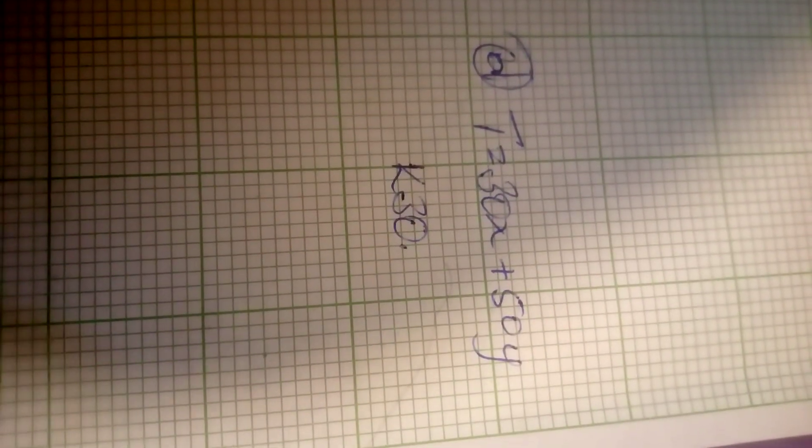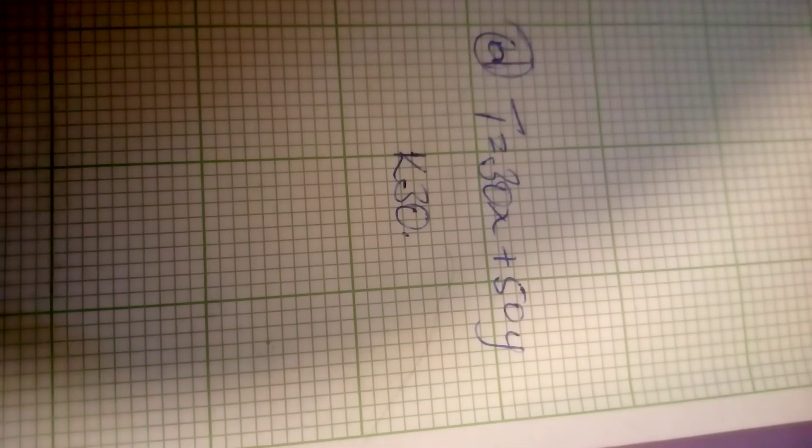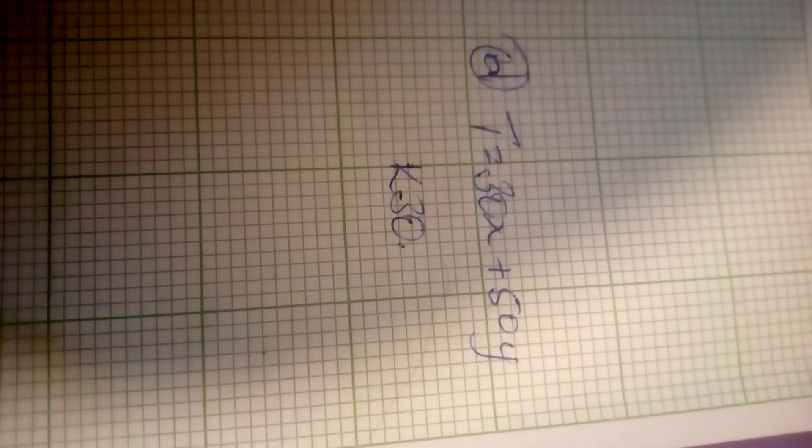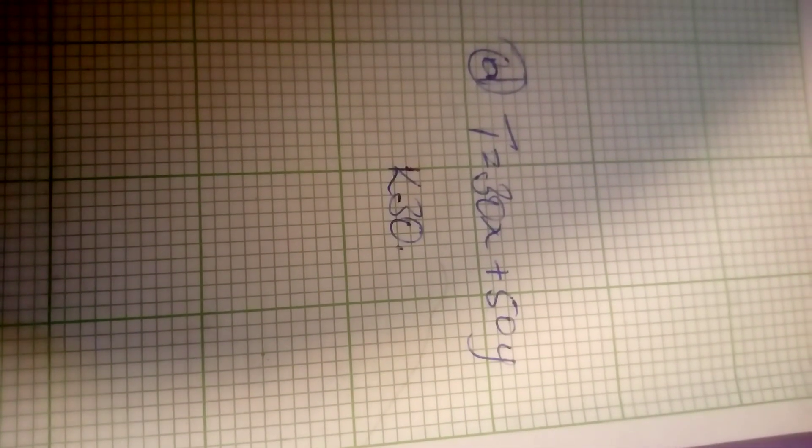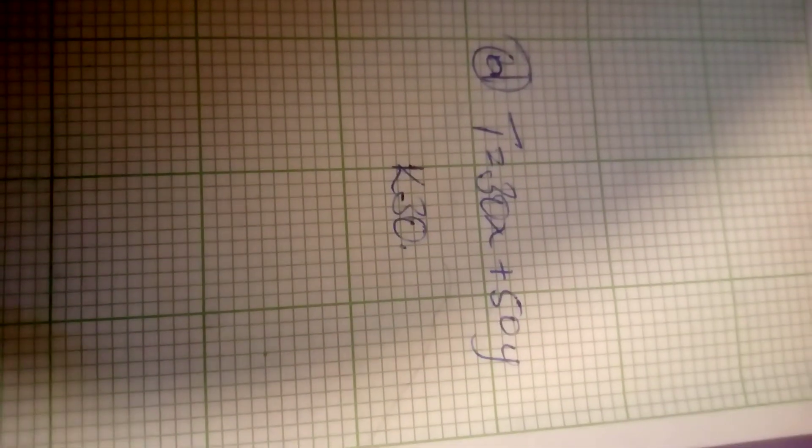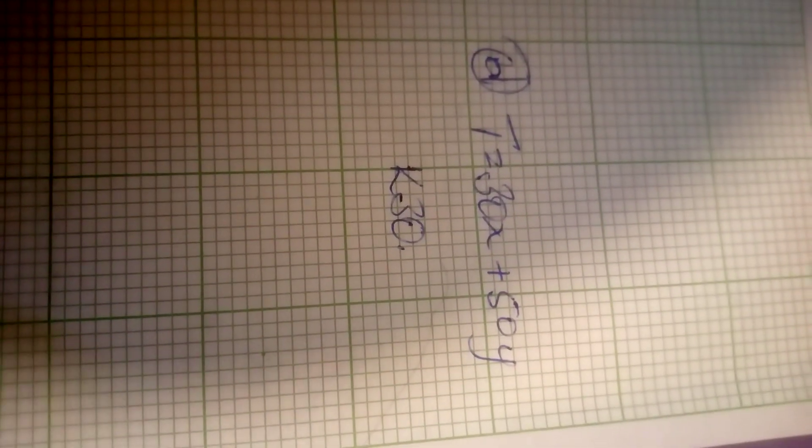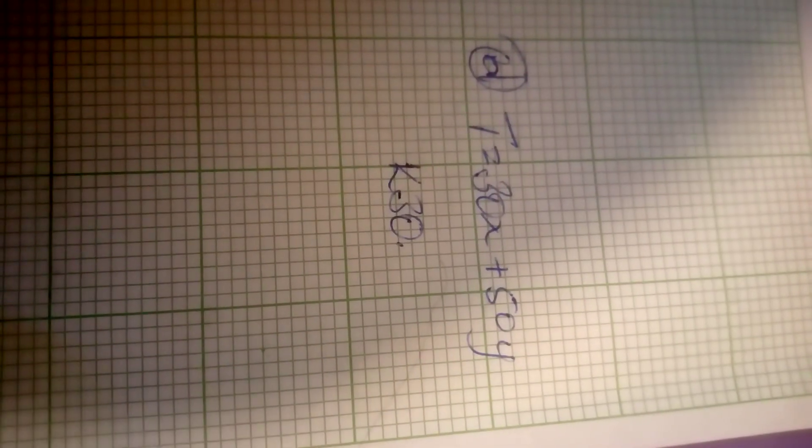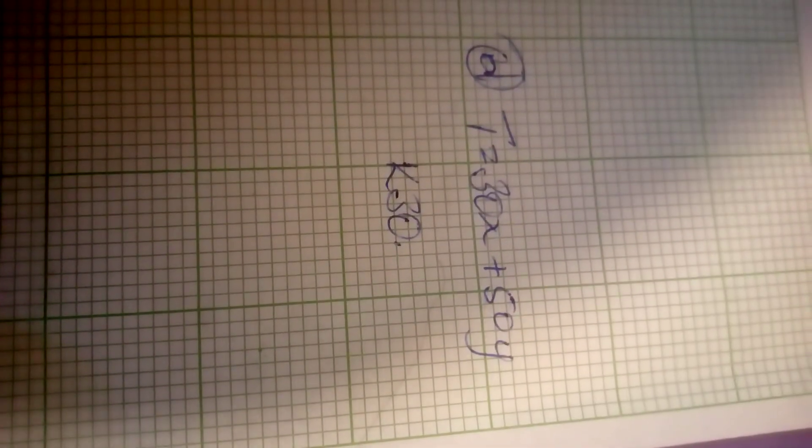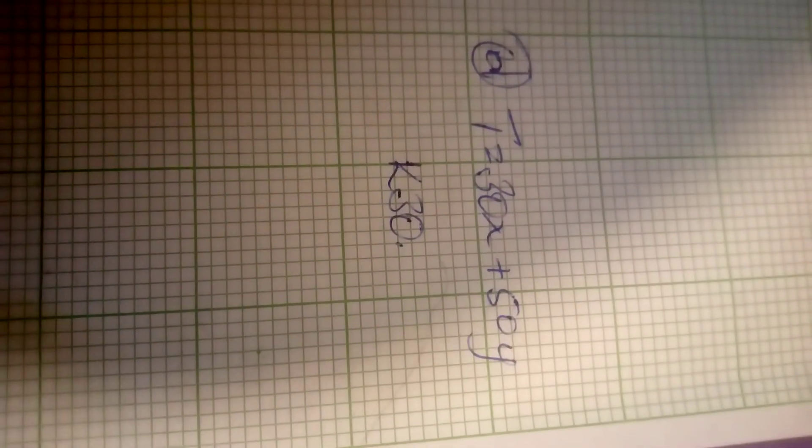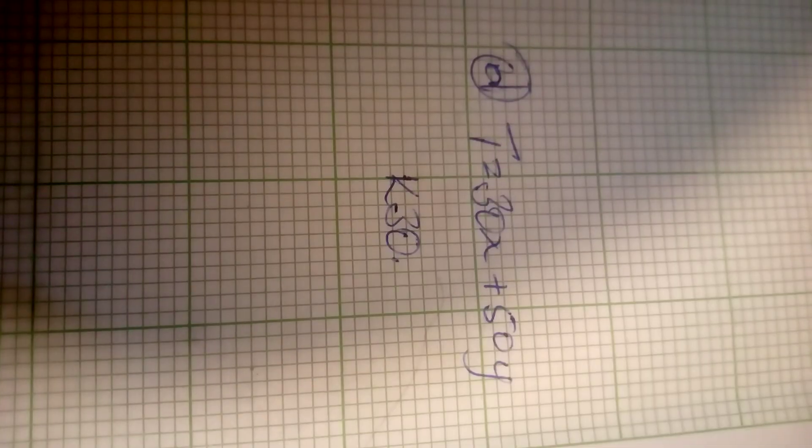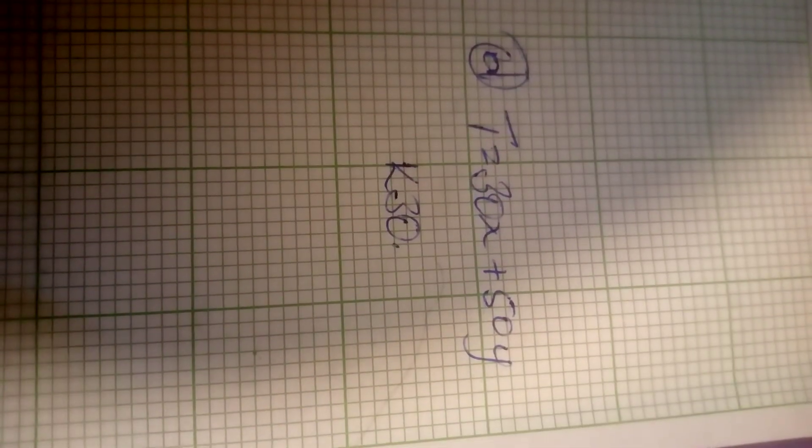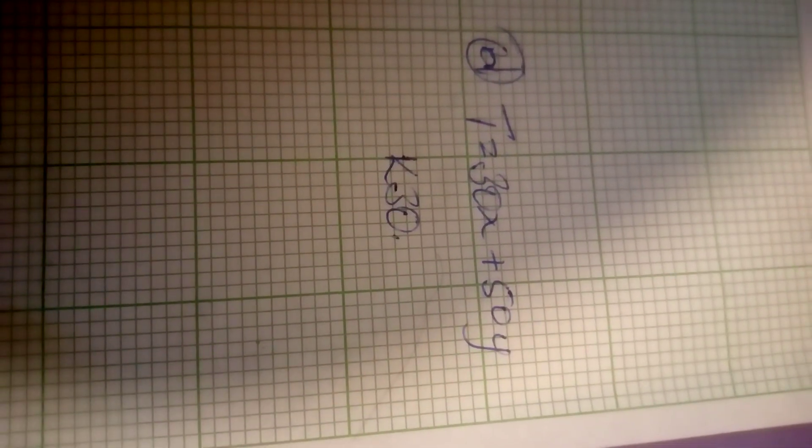Since we know to say t is the total amount of money that is paid by learners and teachers, and I already know to say x is representing the number of learners while y is representing the number of teachers. And if we are given this formula, t equal to 30x plus 50y.